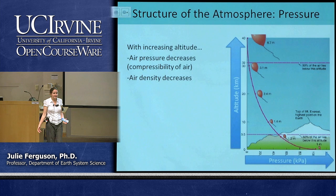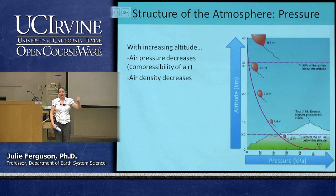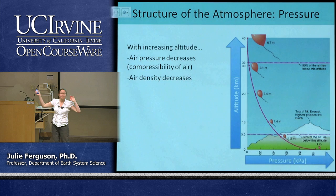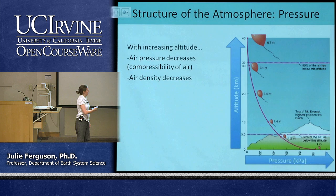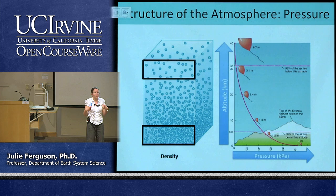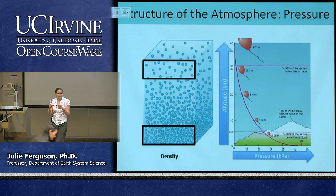Why does this happen? Well, if I got three of you down to the front and told you to stand on each other's shoulders, who would feel the most pressure — the one at the top or the one at the bottom? The one at the bottom, because they're feeling the weight of the people above. The person at the top is fine and happy, whereas the person at the bottom is feeling all of that weight. It's exactly the same thing with the atmosphere.